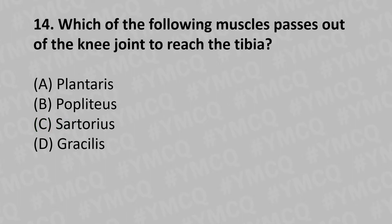Moving to our fourteenth question: which of the following muscles passes out of the knee joint to reach the tibia? Option A: plantaris, Option B: popliteus, Option C: sartorius, Option D: gracilis. And the answer is Option B: popliteus.